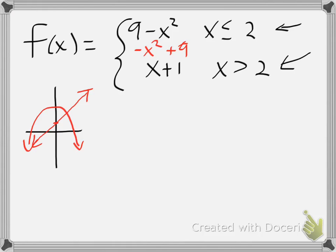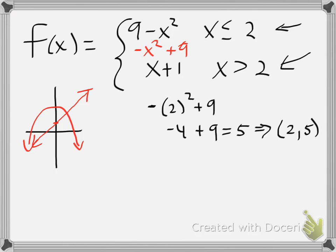So in the first one, I'm going to put 2 in for x: the opposite of 2 squared plus 9 gives me negative 4 plus 9. Remember it's not positive 4 because of order of operations — I square 2 first, then add a negative. So this becomes 5, corresponding to the point (2, 5). As we go from left to right, the graph of negative x squared plus 9 ends at the point (2, 5). For my second graph, putting in 2 plus 1 gives me 3, which means the graph of y equals x plus 1 begins at the point (2, 3).